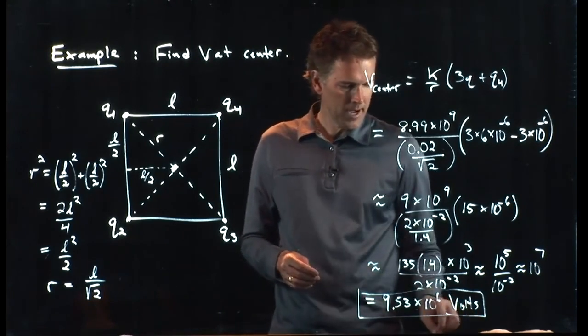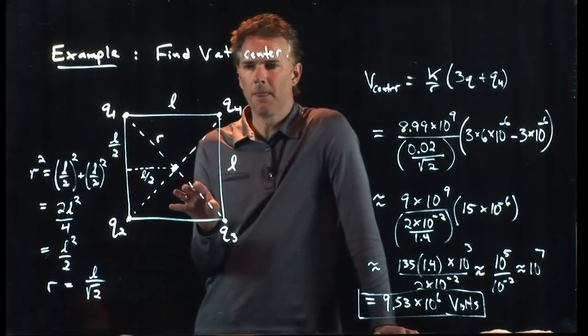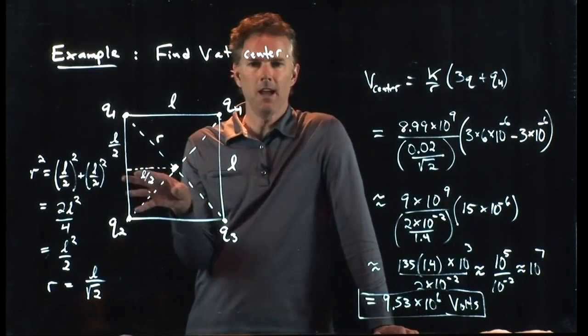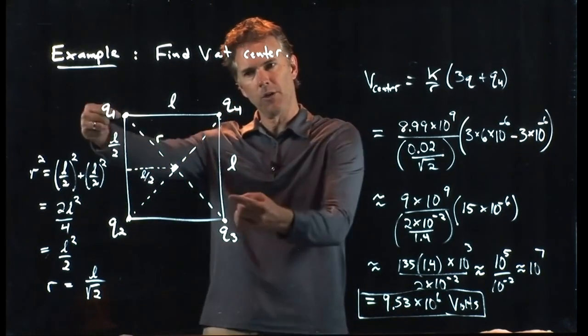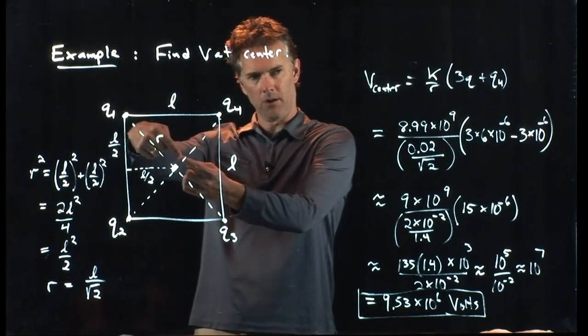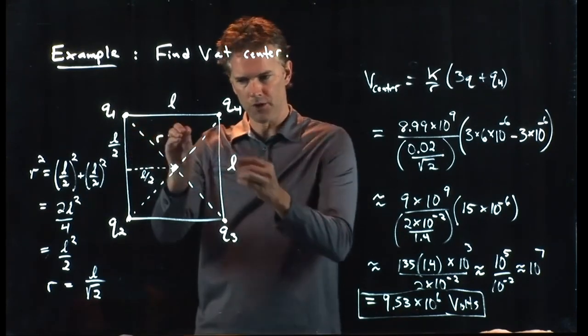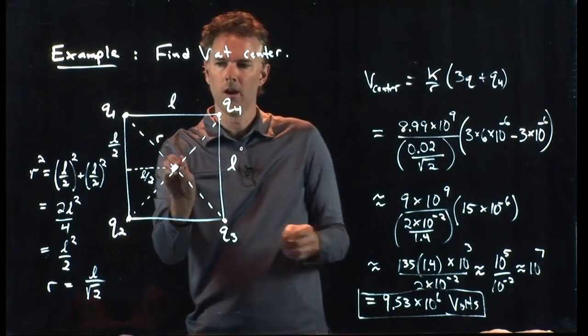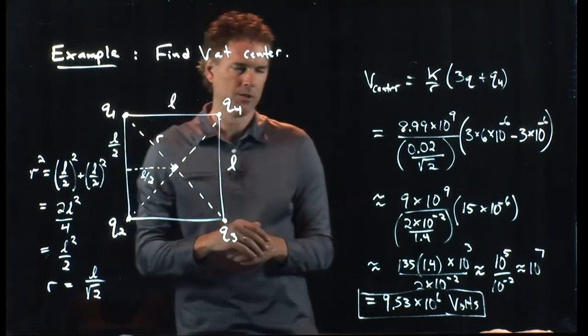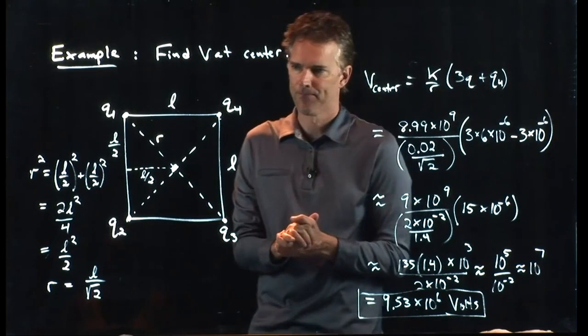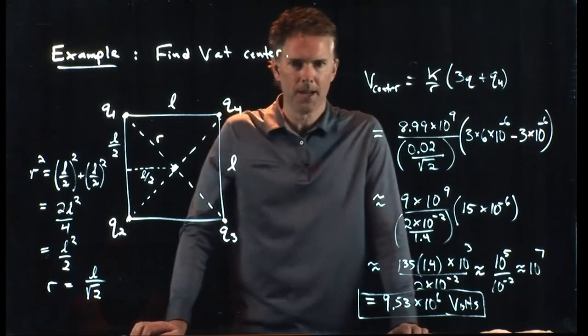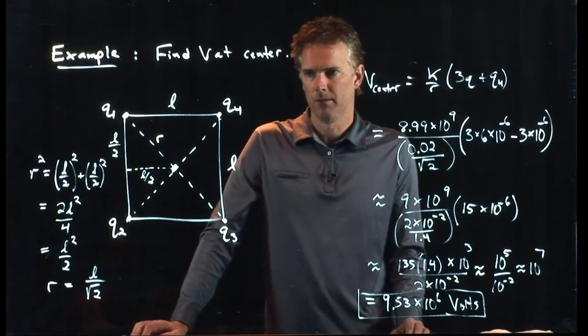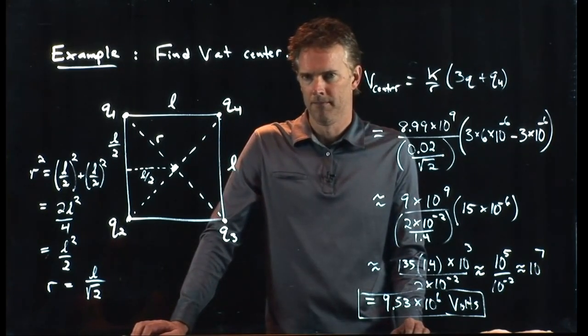Now the nice thing about potential here is it's a scalar. We don't have to worry about any direction. There was no direction associated with our geometry. It was just what's the value there determined by the distance away from the point charge. And then we just had to add them up. Questions about this? This would be the time to ask if you guys have any questions about what we just did.